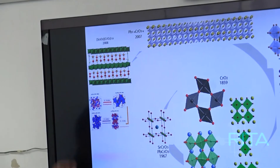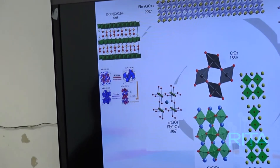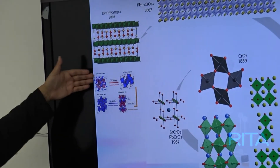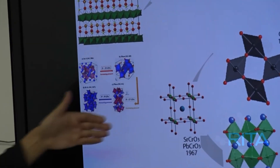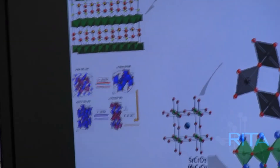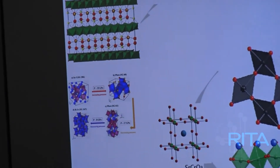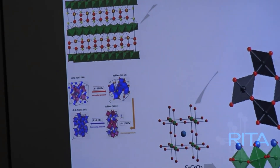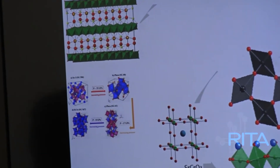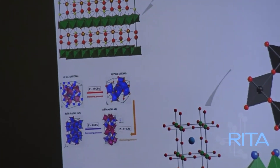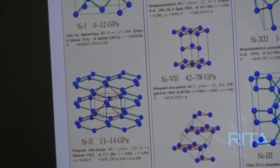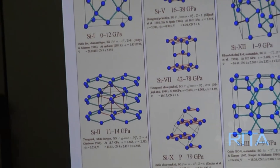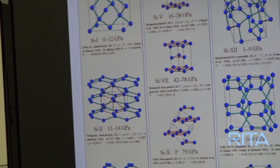Lo que da cuenta nuestra figura es lo siguiente: tenemos un material y queremos estudiar qué pasa cuando aumenta la presión, si se presenta una transición de fase sólida a sólida. Nuestro interés está centrado en eso, y esas son las cosas que nosotros queremos estudiar.